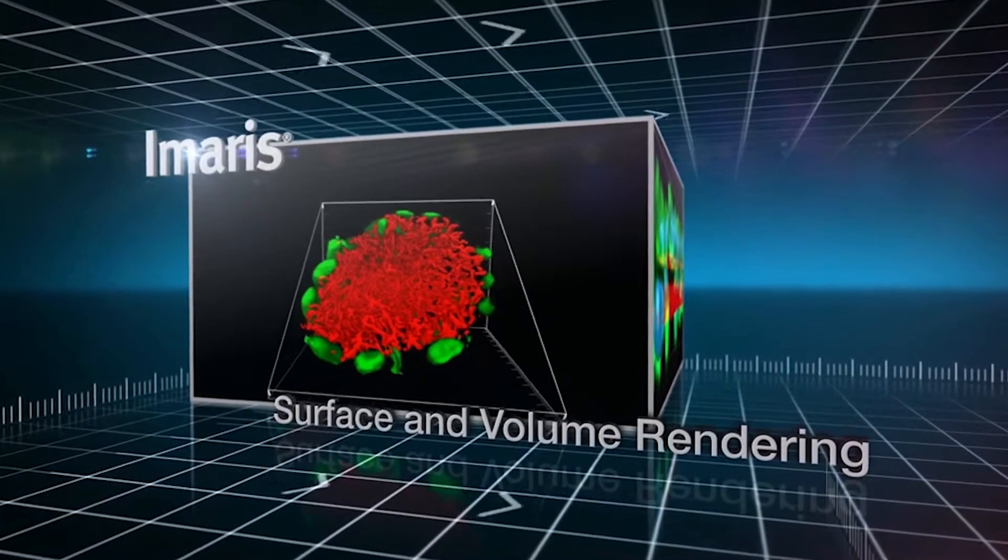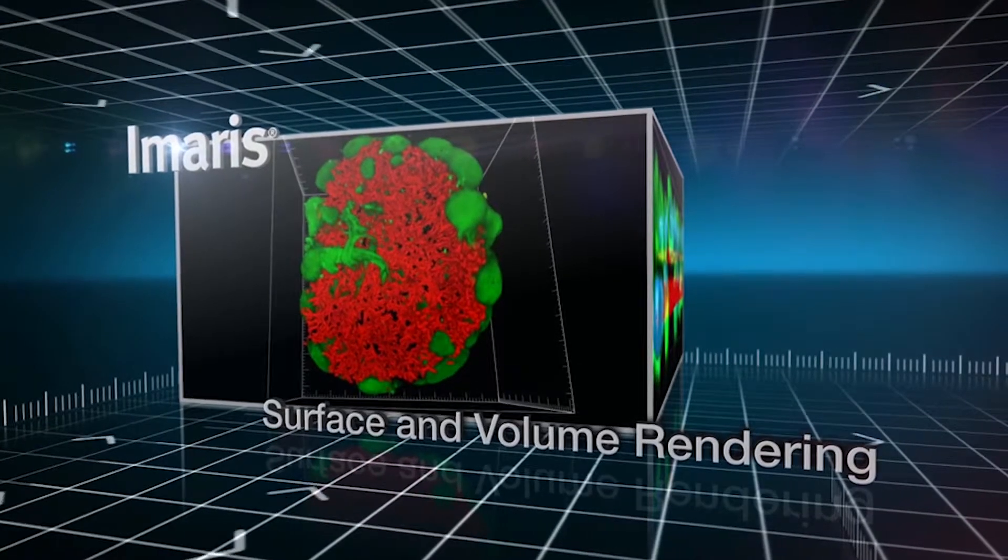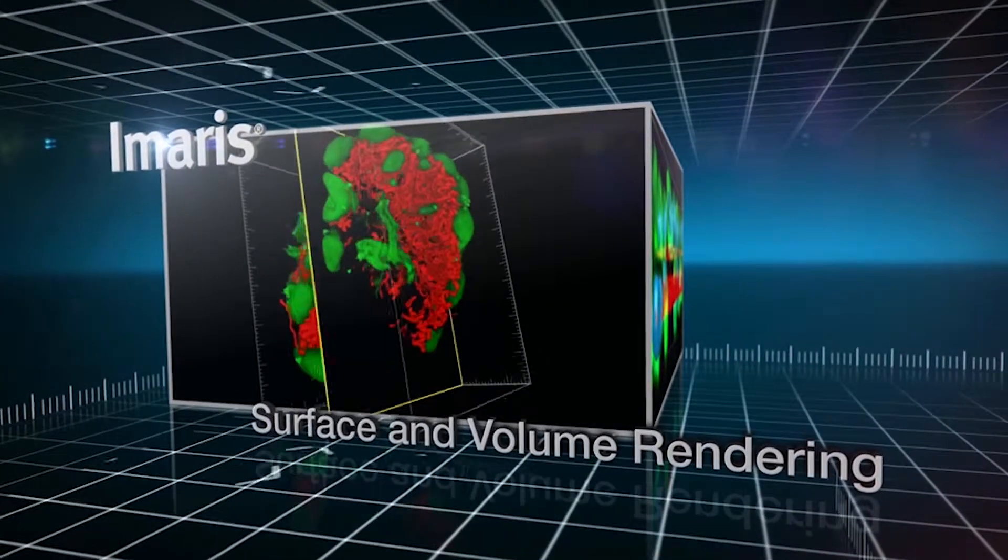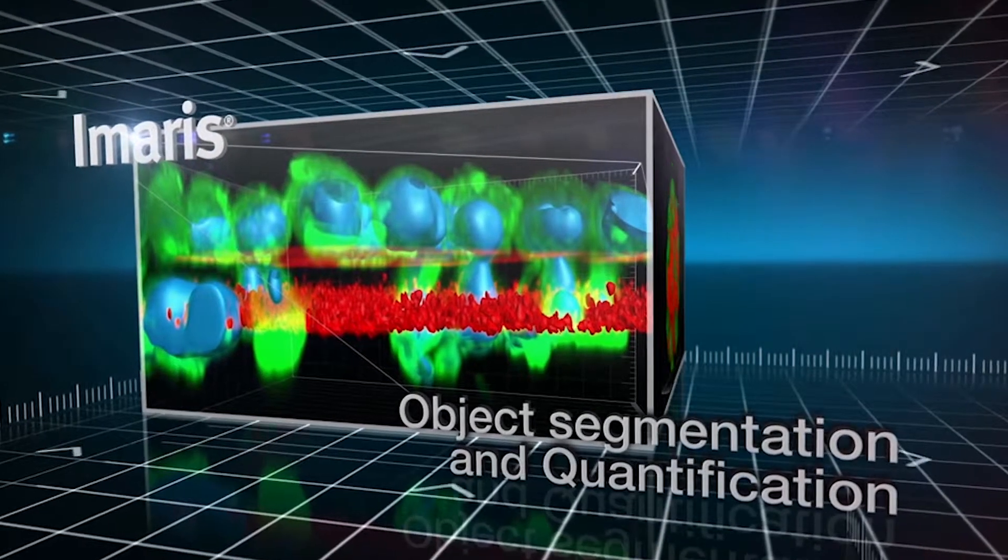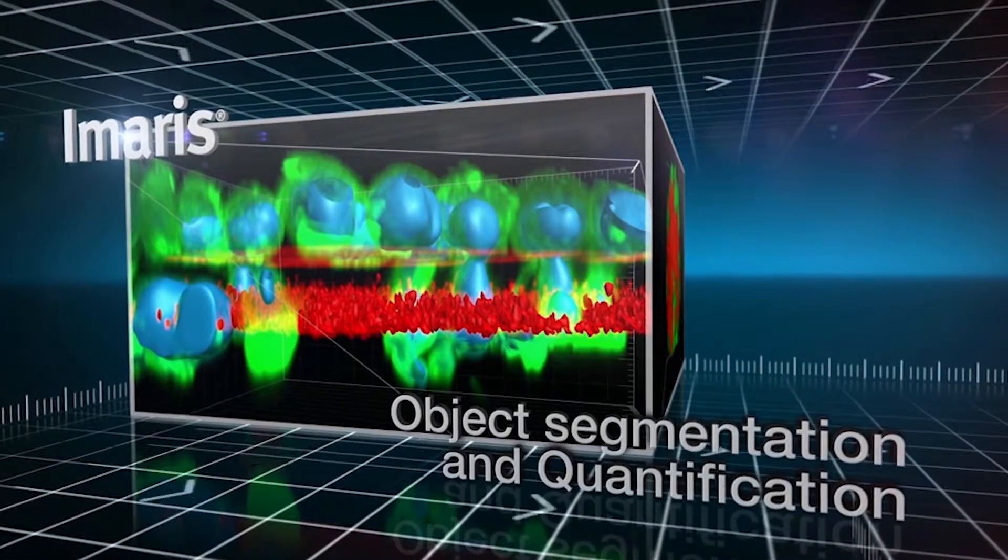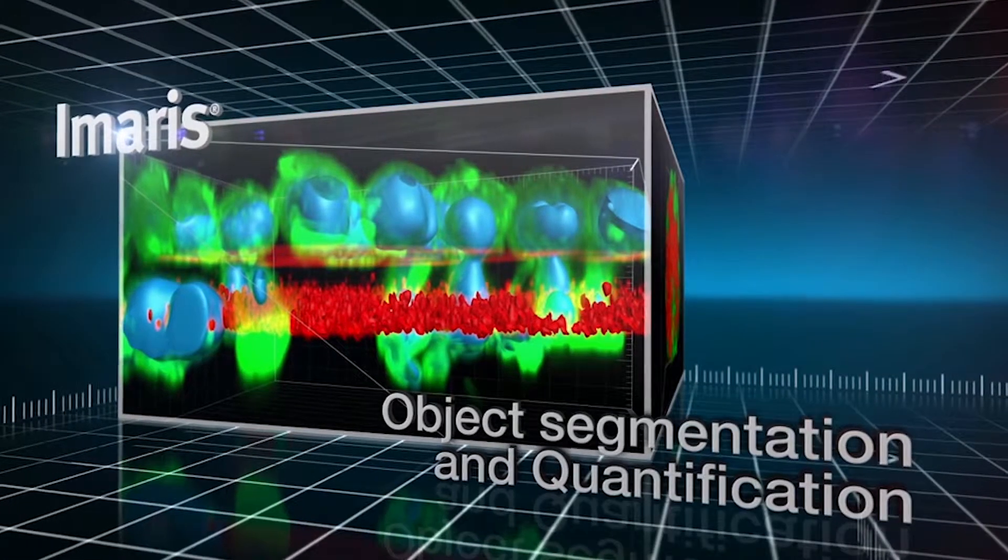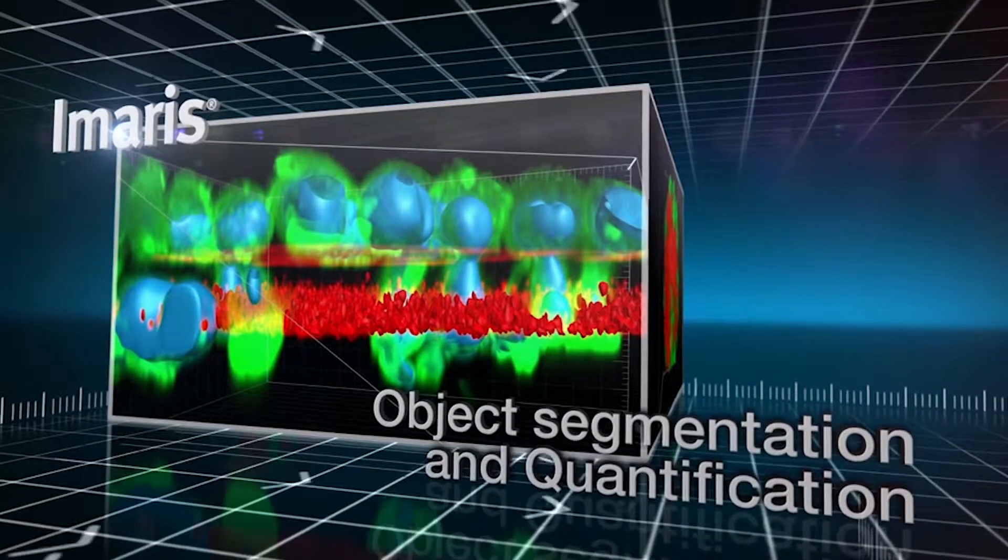Imaris is the core software to bolster your 3D and 4D image visualization. With a vast array of segmentation options, Imaris provides you with the most effective tools to segment even the toughest datasets and help you identify and visualize individual objects.